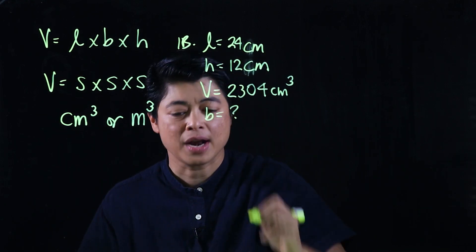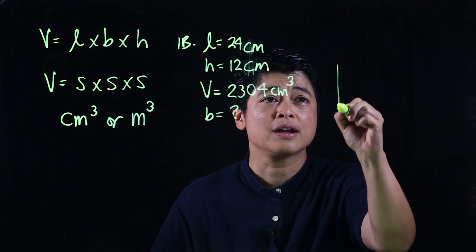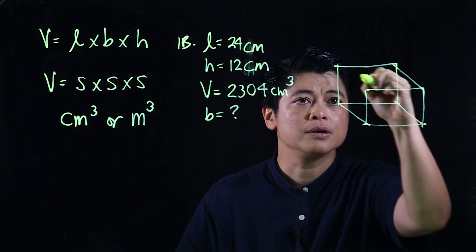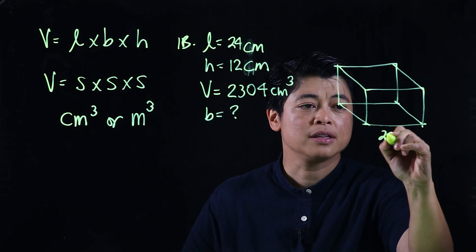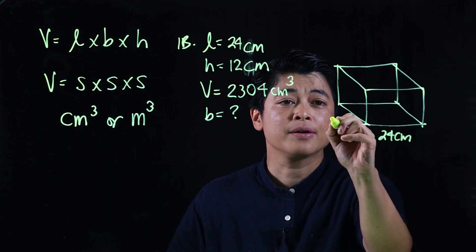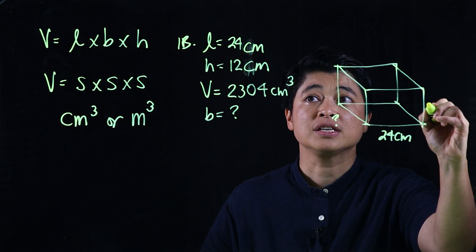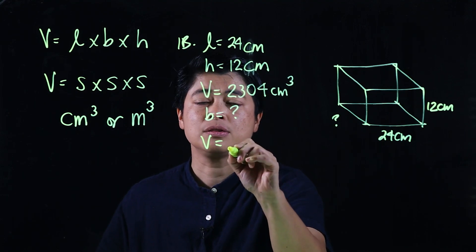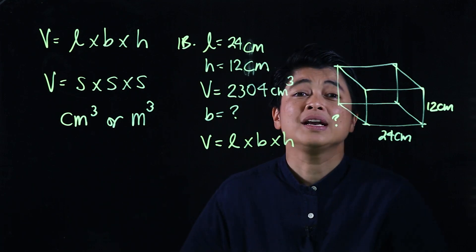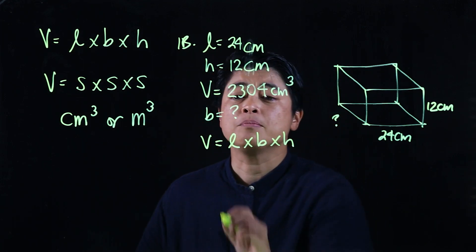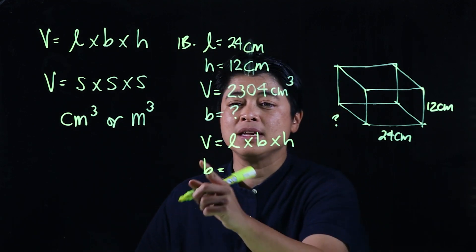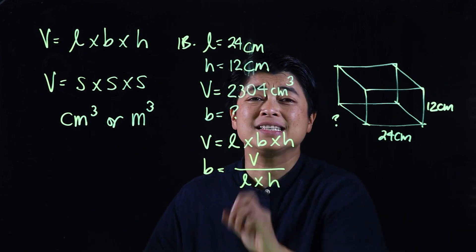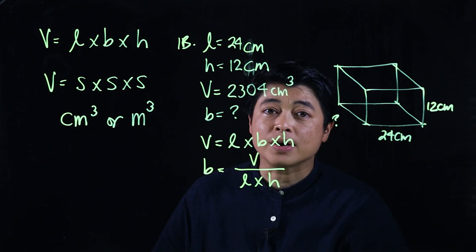There's a figure showing the cuboid: the length is 24 centimeters, the breadth is the question mark, and the height is 12 centimeters. Using the formula — volume equals length times breadth times height — we're not looking for the volume, we're looking for the breadth. So the breadth equals the volume divided by the length times the height.